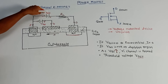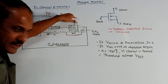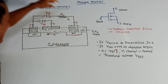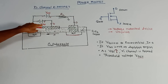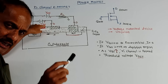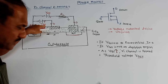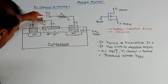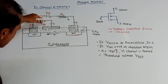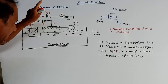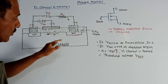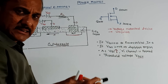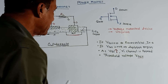The SiO2 layer is used to isolate the gate terminal from the P-type substrate. VDD is the voltage applied to the drain terminal through load resistance RL. VGS indicates the voltage between gate and source, and the positive terminal of VGS is connected to the gate terminal. This completes the construction of the device.